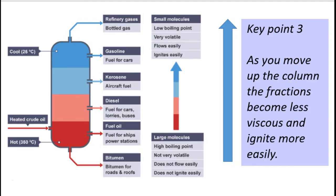Another trend you need to know about is that the viscosity of the fractions decreases as you move up the column. Gasoline near the top is runny like water, whereas bitumen at the bottom is a thick, gloopy, viscous substance used to lay roads. Also, petrol is volatile so it ignites easily, but bitumen does not.